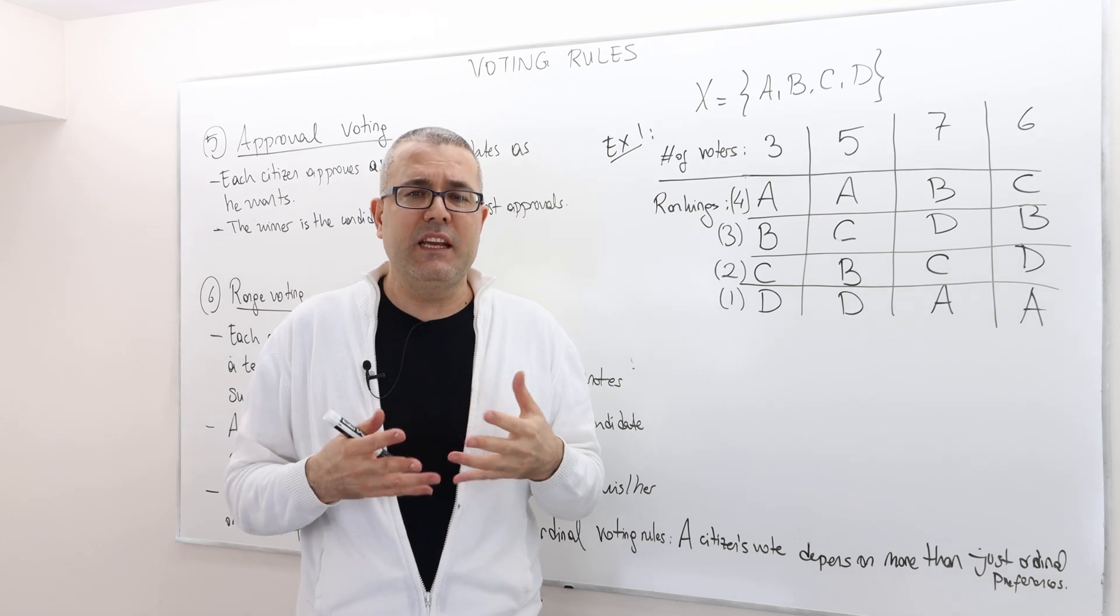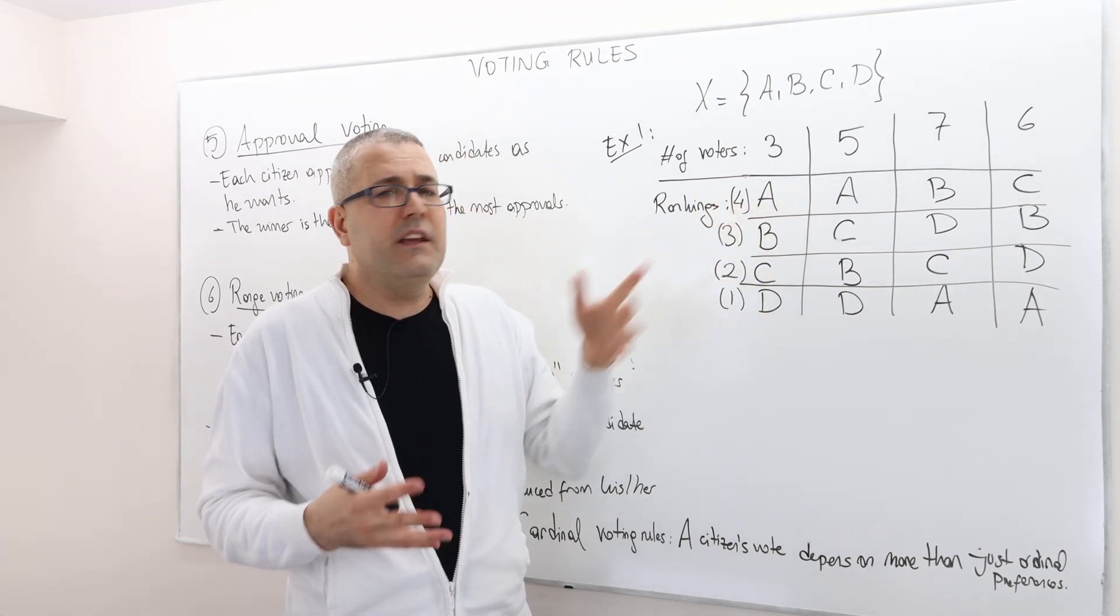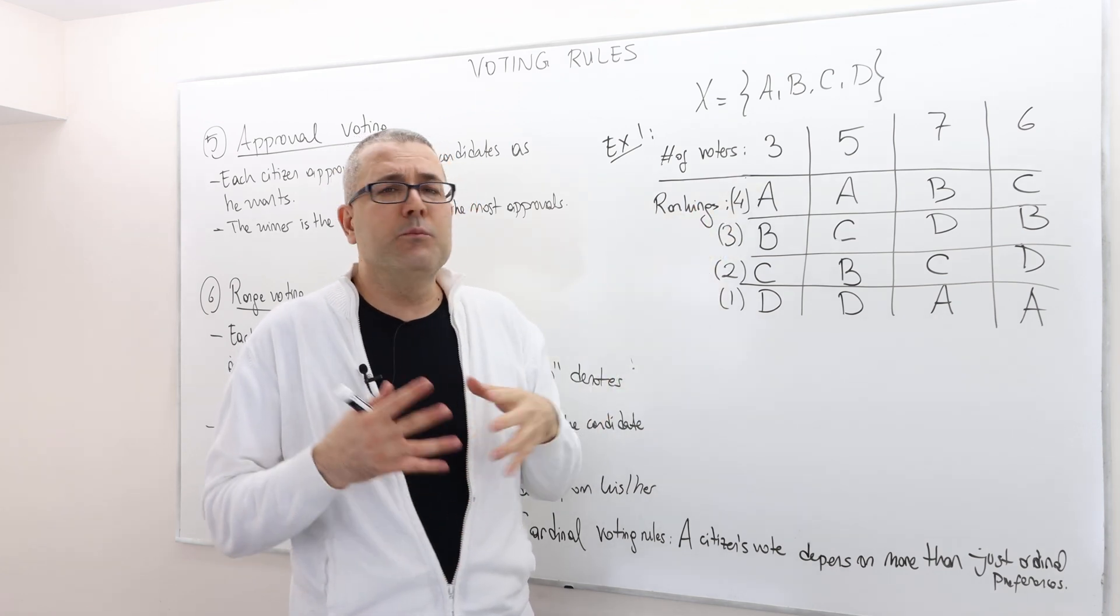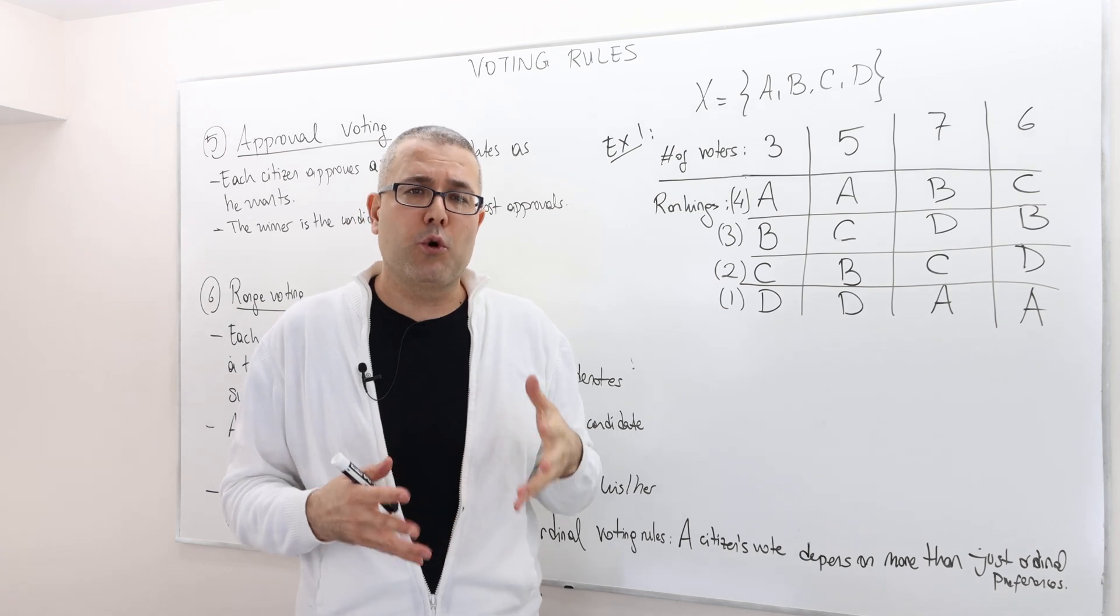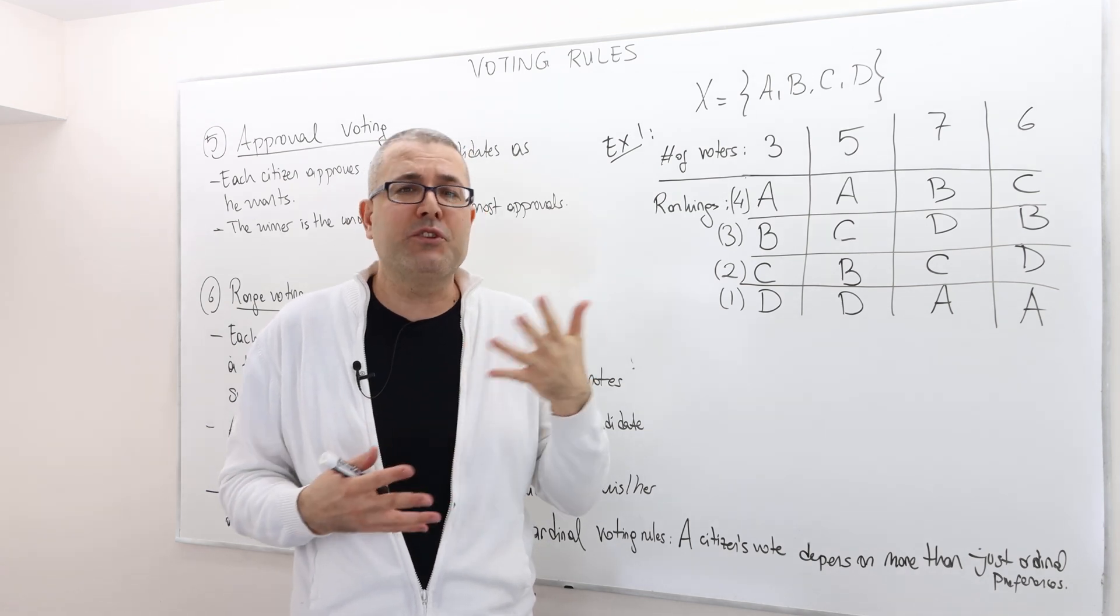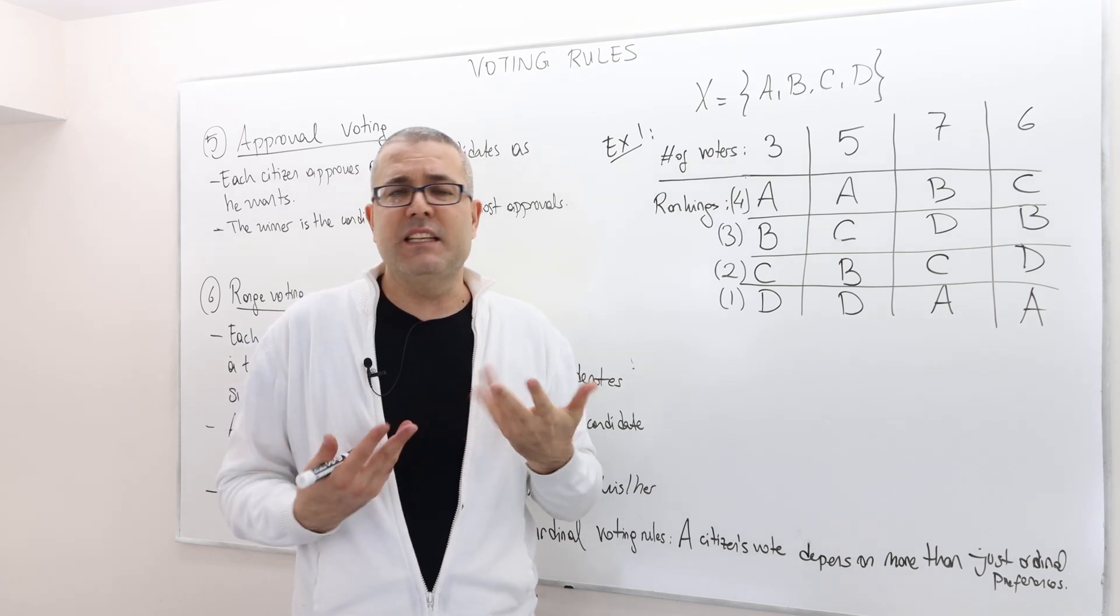So the intensity. So here, all we can say is alternative A, or candidate A, is more preferred than candidate B for some voters. But how much more better? How much better or how much worse? Well, the intensity is not included.